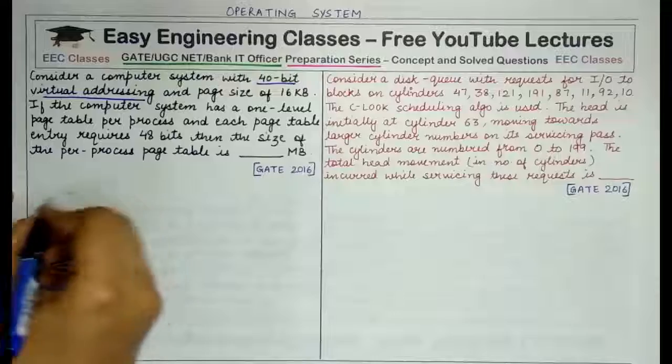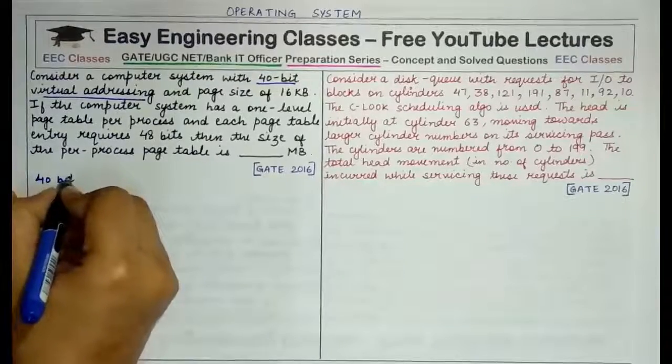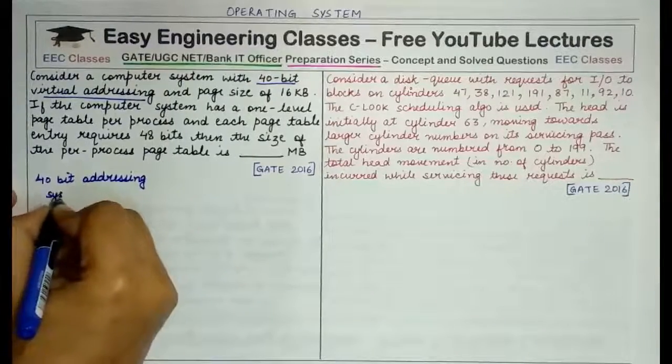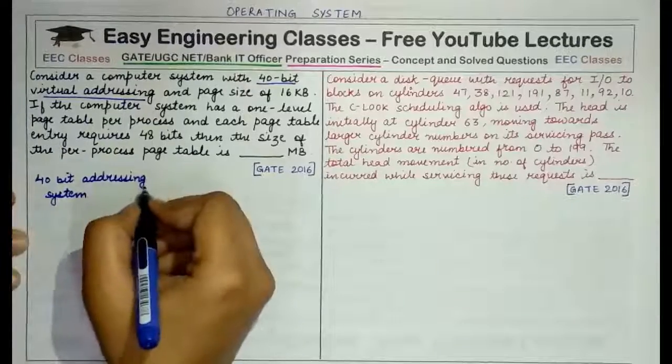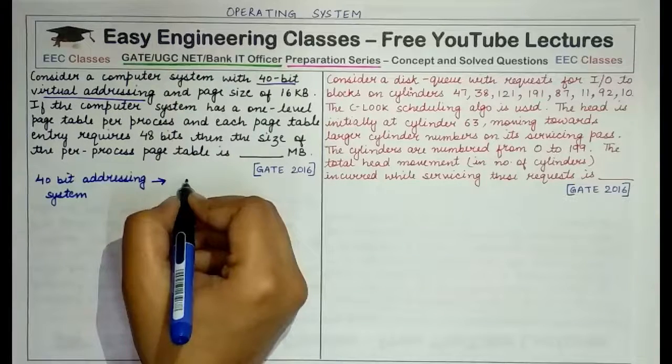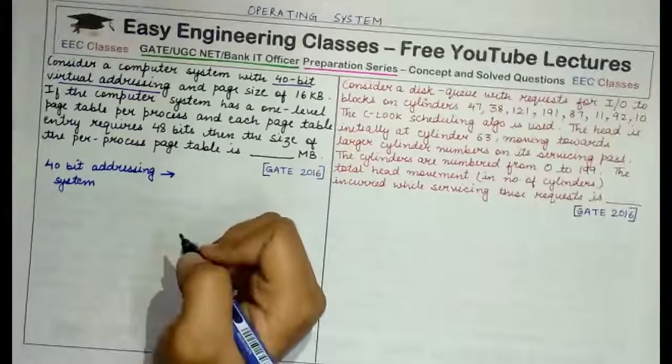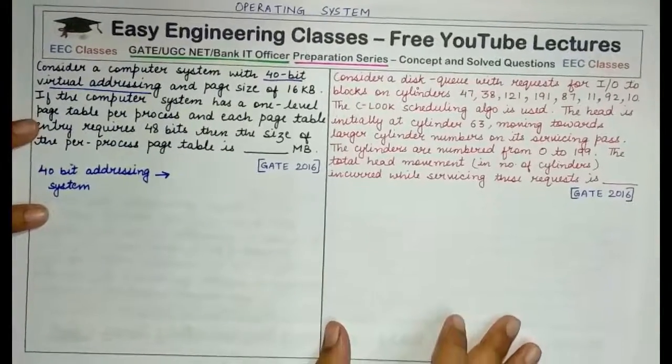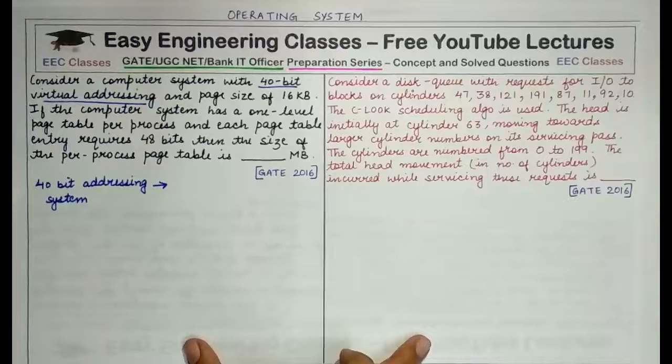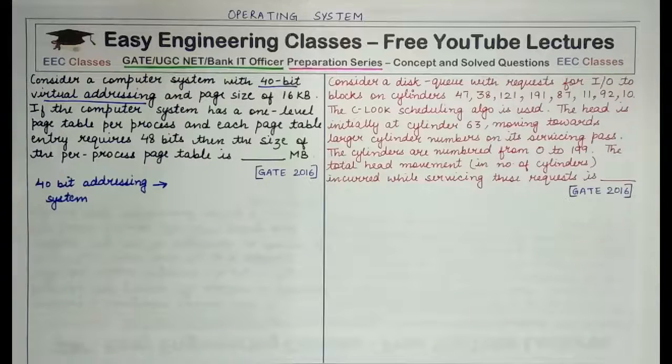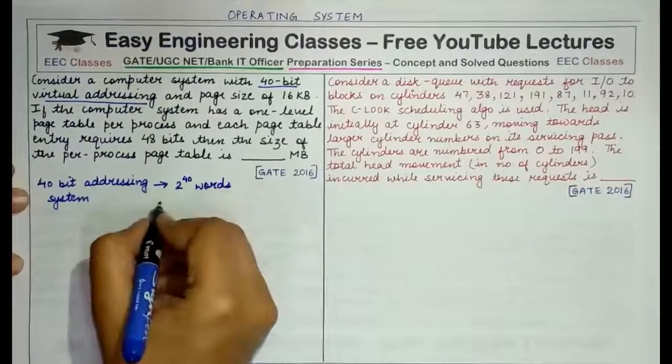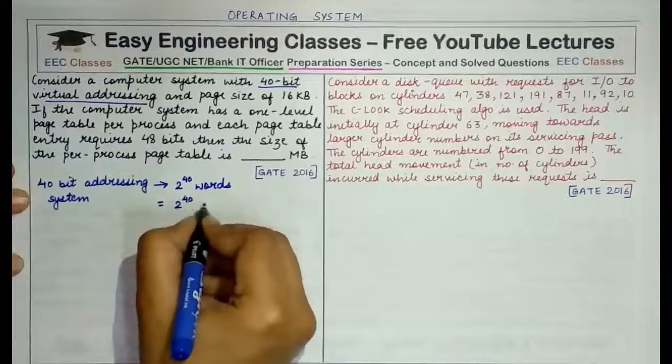Since it is given in this question that it is a 40-bit virtual addressing system, what does it mean? This only means that the total address space that would be present is of 2 raised to power 40 words. With 40 different bits, how many different addresses or total address space can be provided? It can be 2 raised to power 40 combinations, which is equivalent of 2 raised to power 40 bytes.